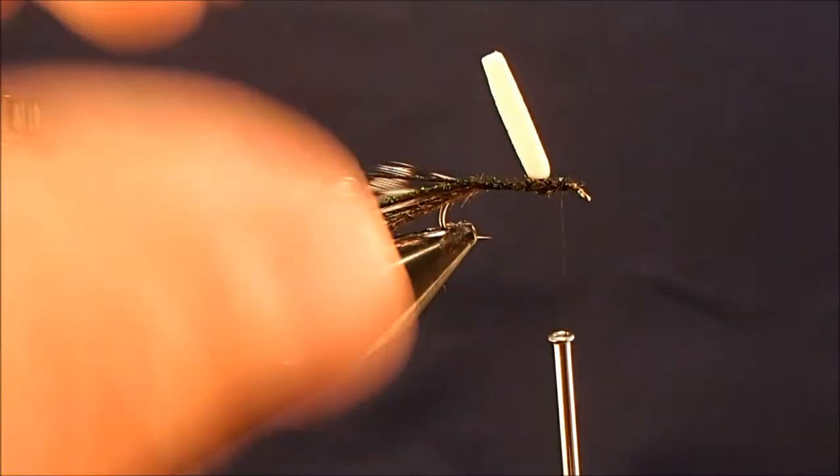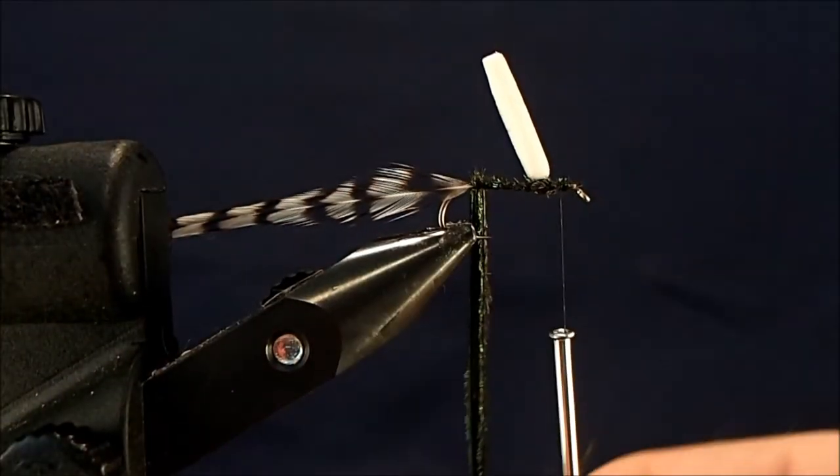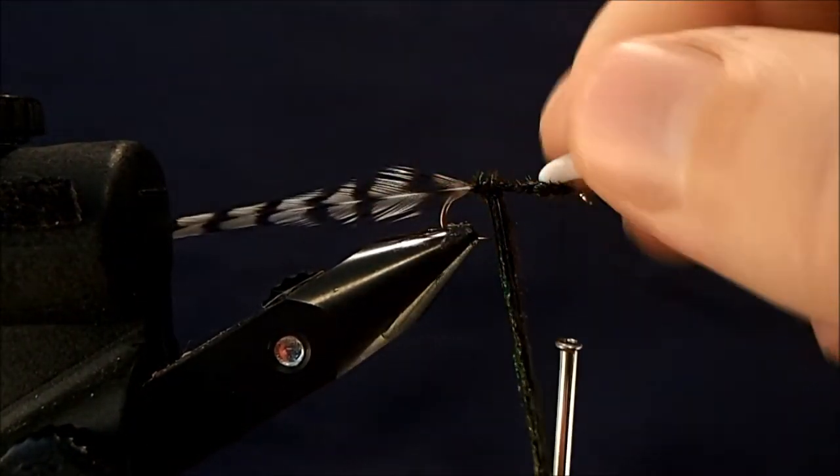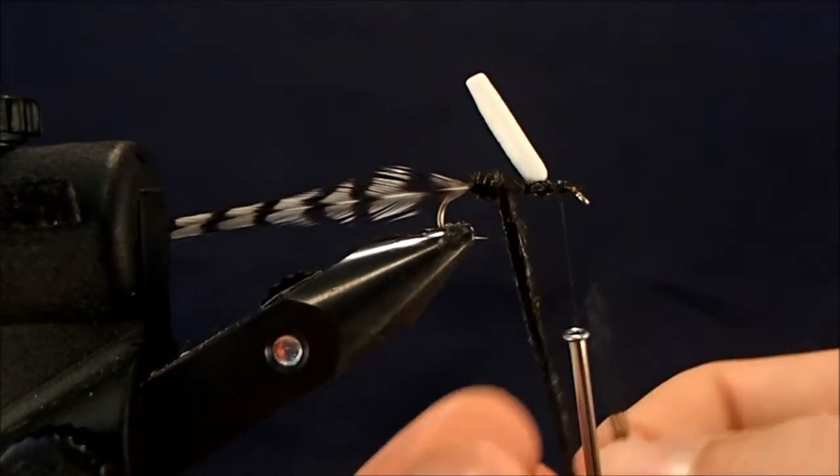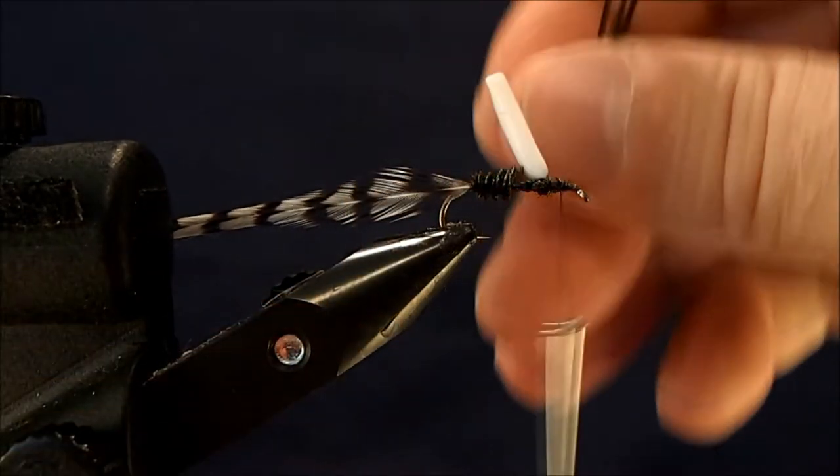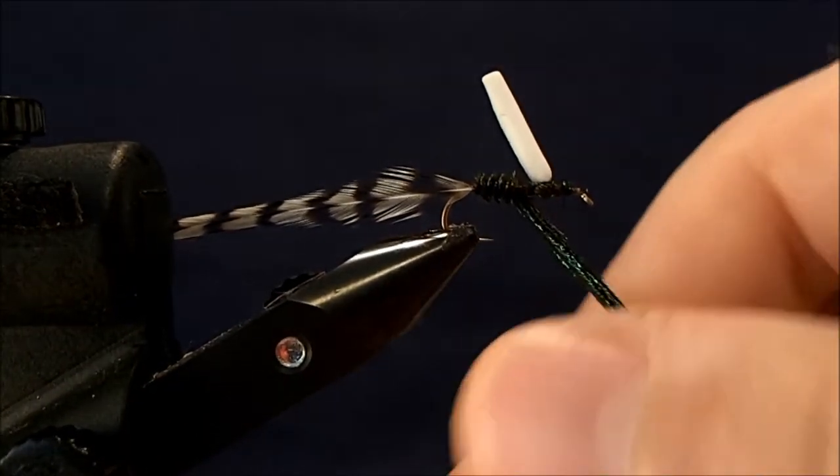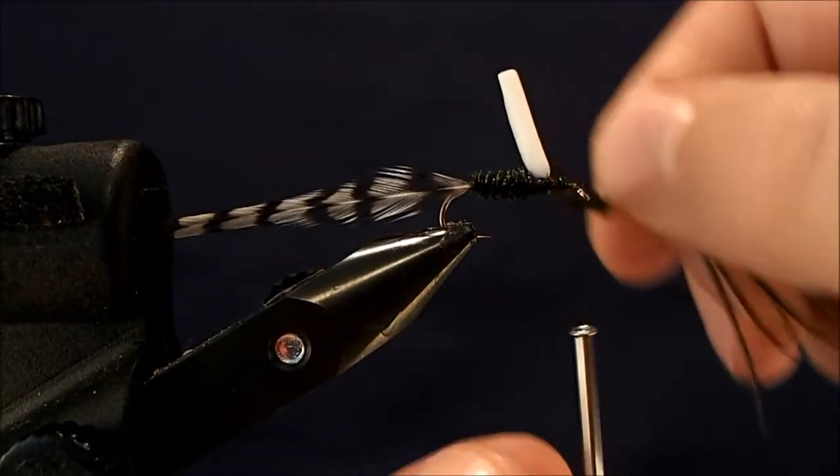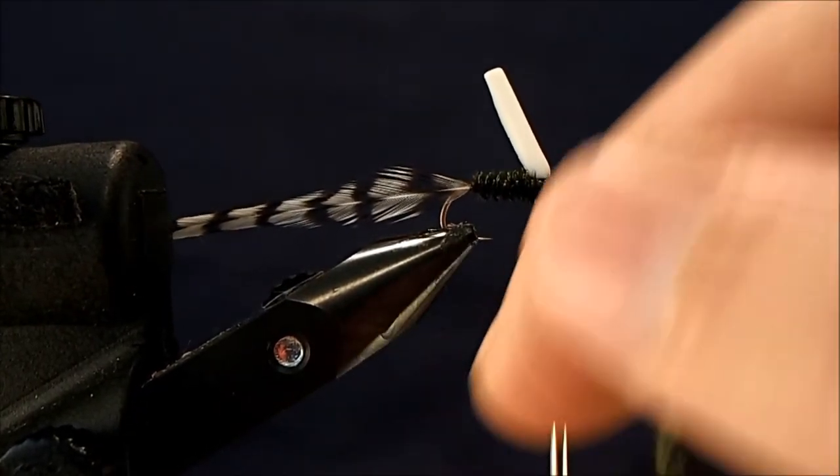Alright, now I can start wrapping my hurl. I'll just take some nice even wraps, build that body up towards the front. This will help stand that post up as well.